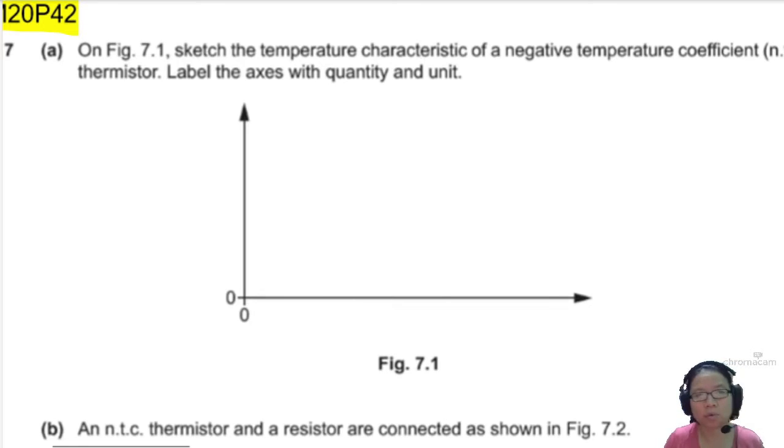You are asked to, on figure 7.1, which is this graph axis, sketch the temperature characteristics of a negative temperature coefficient thermistor. Label the axis with quantity and unit. Let's pause a bit and think about this negative temperature coefficient thermistor.